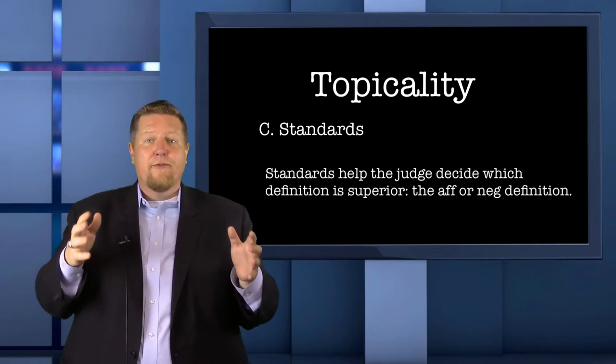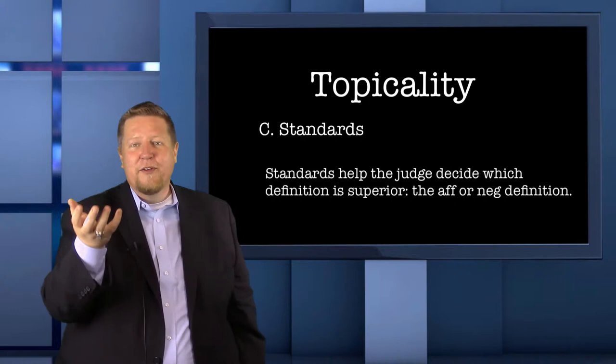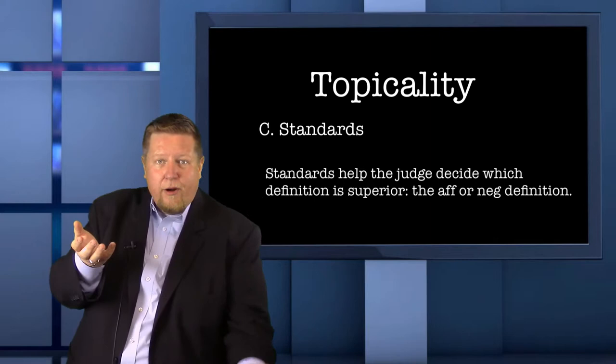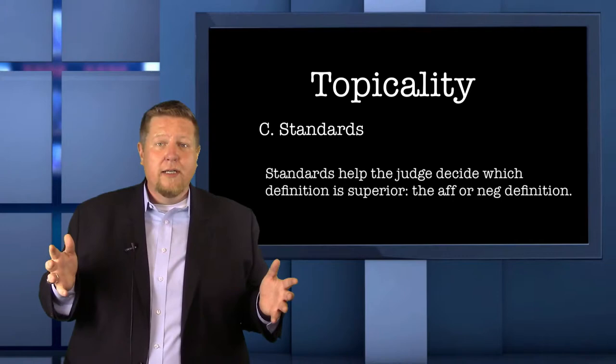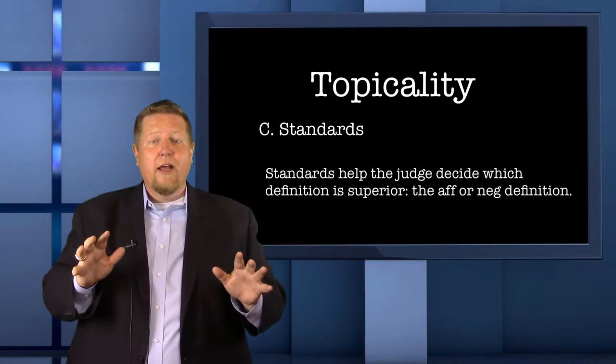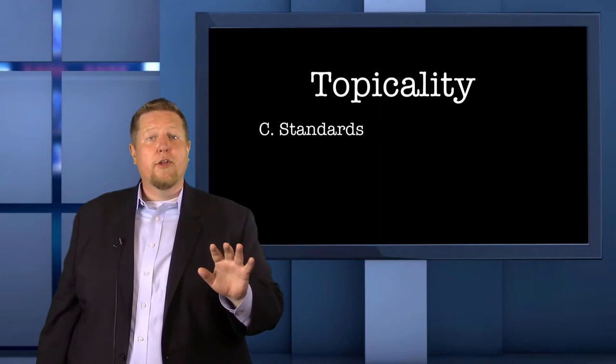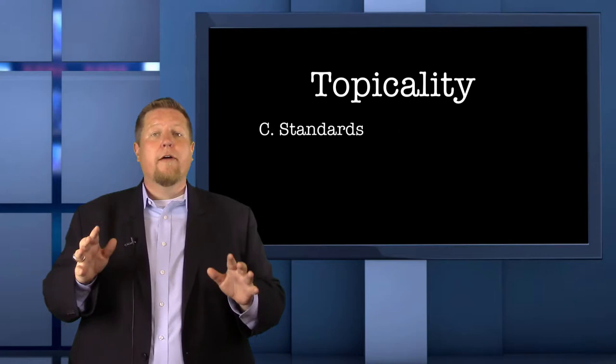You already read one definition of the word or phrase in the resolution, and you can predict that the affirmative team will also read a definition, resulting in the judge having to consider two definitions. A good negative team will want to tip the scales in their favor by helping the judge decide which definition is best. If the judge agrees with how you define the word, you win; if the judge agrees with the affirmative team's definition, they win. For this reason, the negative team usually reads two or three standards so the judge has a few pathways to vote for the negative team. If they read only one standard and lose it, they lose the topicality argument; if they read more than one, they still have a chance of winning.